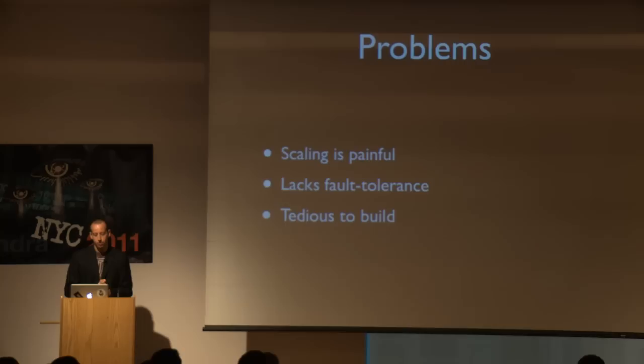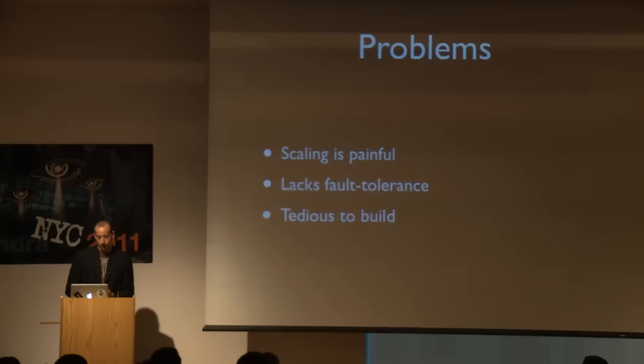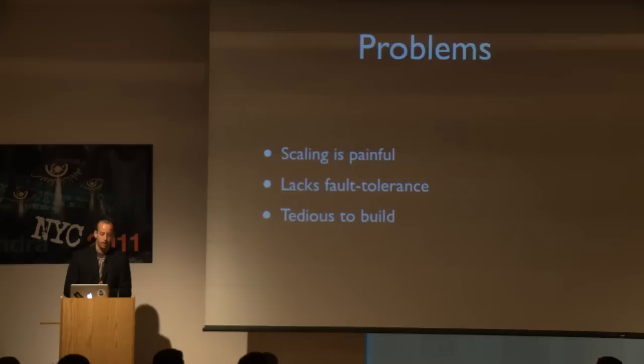There were a lot of problems with this architecture that motivated building a new system. First, scaling was really painful — to add another worker writing to Cassandra, we'd have to deploy a new worker, set up its own queue server, and change upstream workers to route messages correctly. Second, the system lacked fault tolerance — failover was all very manual and brittle. Worst of all, building these things was really tedious. We spent almost all our time figuring out where to deploy workers and who sends messages to whom, and the actual real-time logic we cared about corresponded to a relatively small percentage of the codebase.